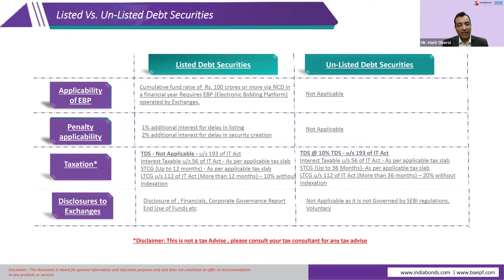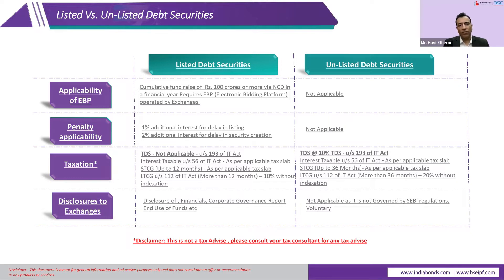From an investor's perspective, taxation is most important — though we are not tax advisors, so consult your tax advisor for details. Broadly, for listed debt securities, there is no TDS on interest income. Whereas for unlisted debt securities, TDS at 10% is applicable under Section 193 of the Income Tax Act. Interest income is always taxable at your marginal rate of taxation regardless.